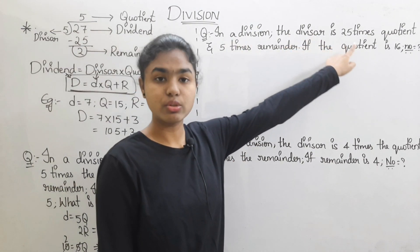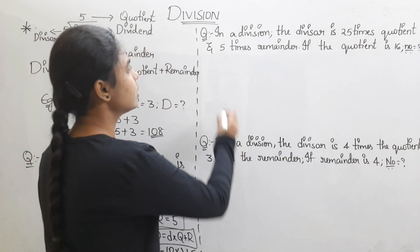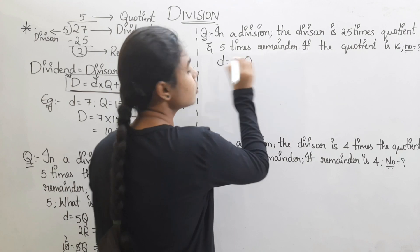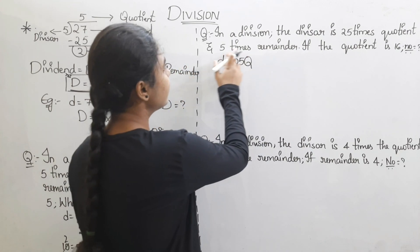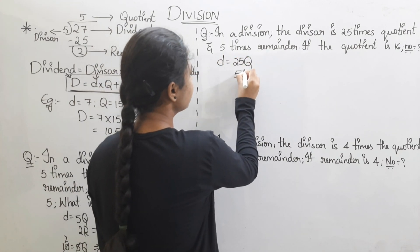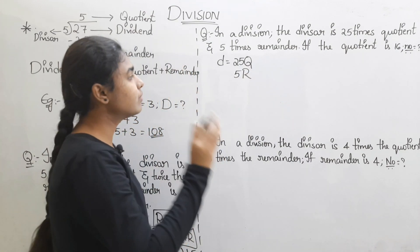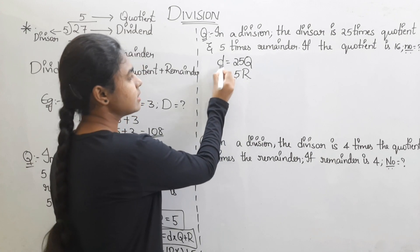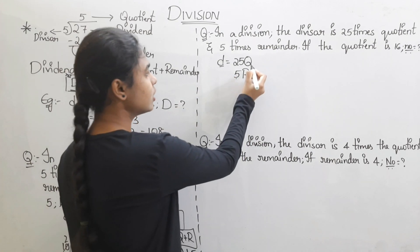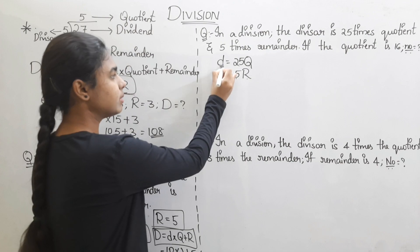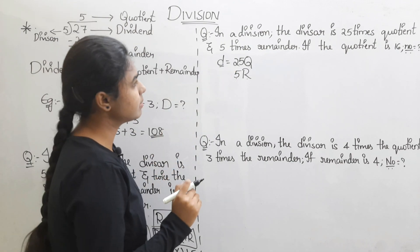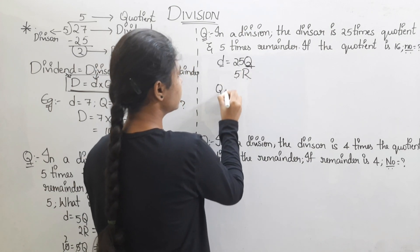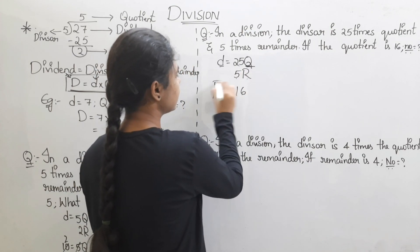Next question: In a division, the divisor is 25 times the quotient and 5 times the remainder. If the remainder is 5 times some value and the quotient is 16, we need to find the dividend — the number.